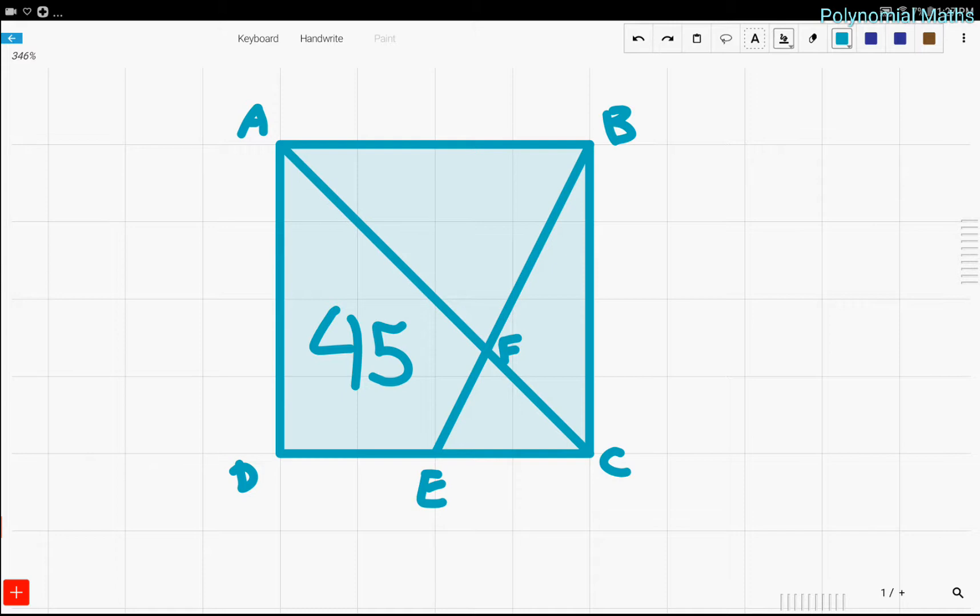So this problem is a geometry problem, and there are trapezoids, triangles, and there's one big square surrounding it all. Now what the problem asks is for you to find the area of this whole square. Point E is the midpoint of DC, and this is a square. And they tell you that the area of trapezoid ADEF is 45.